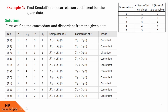Now let us proceed for next pair (1,3). For observations 1 and 3, ranks of x are 1 and 3, and corresponding ranks of y are 3 and 4. Let us check the relation between the ranks of xi and xj, and then yi and yj. I see x1 is less than x3, and similarly y1 is less than y3. Since both inequalities are in the same direction, we say these pairs are concordant. Similarly, we will find the concordant and discordant status of the remaining pairs in this way.